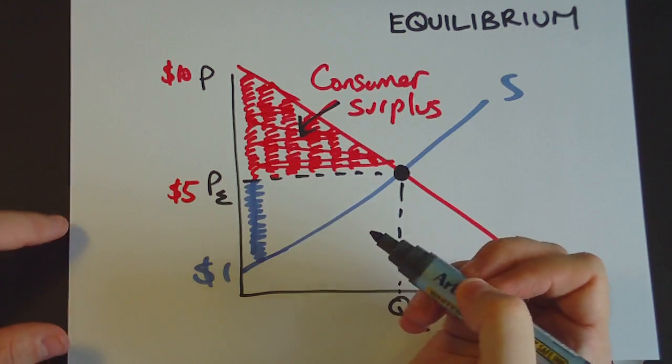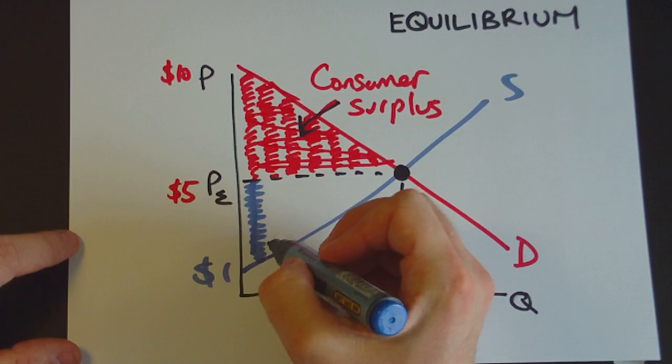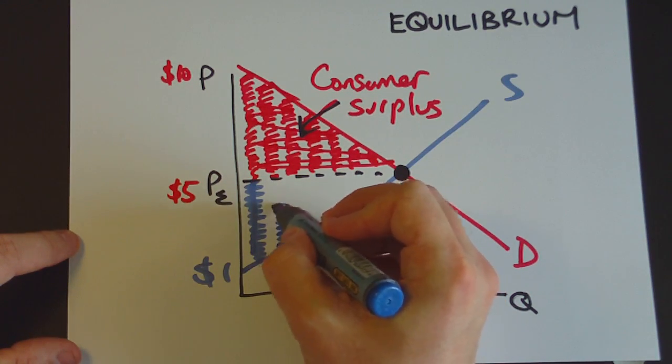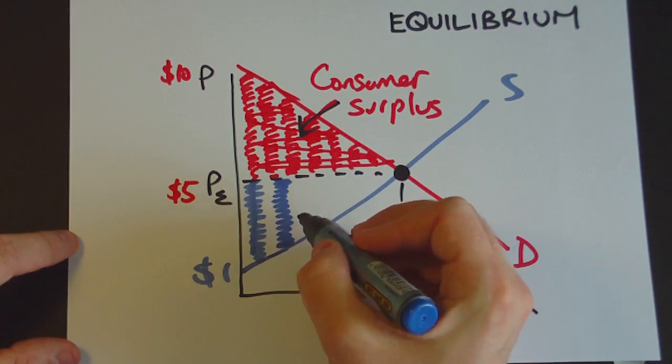They're able to sell it for $5. They get an extra $4 above what they actually need. There's another firm here who's willing to sell it for say $2. Again, but they're able to sell it for $5 and so on.